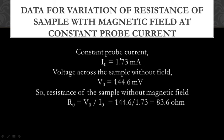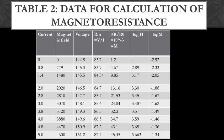The experimental data uses a constant probe current I_0 = 1.73 mA, voltage across the sample without field V_0 = 144.6 mV, and resistance with no magnetic field R_0 = V_0 / I_0 = 83.6 Ω. The overall table shows current continuously increasing, causing the magnetic field to increase. The probe voltage is measured and R_M, the resistance in the presence of the magnetic field, is calculated, along with the magnetoresistance ΔR / R_0.